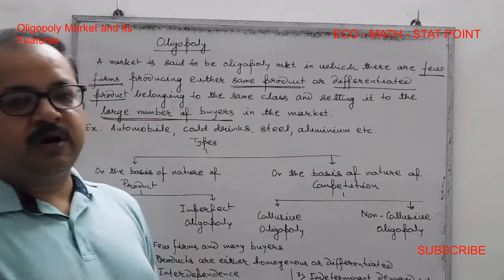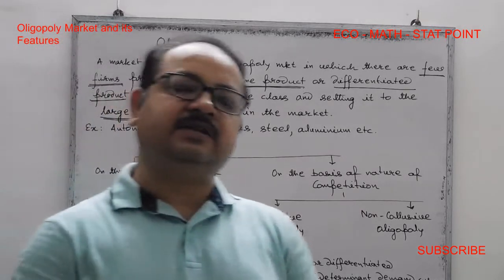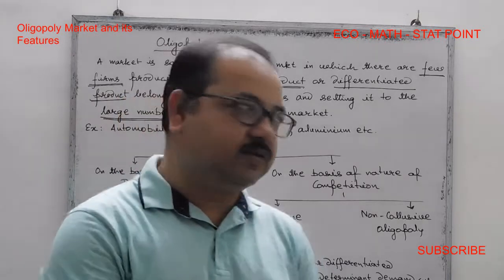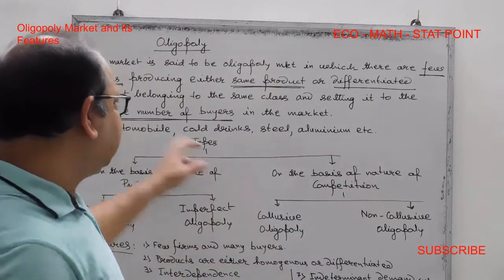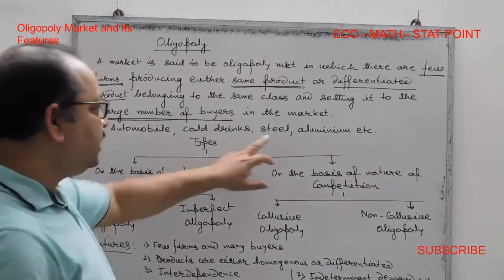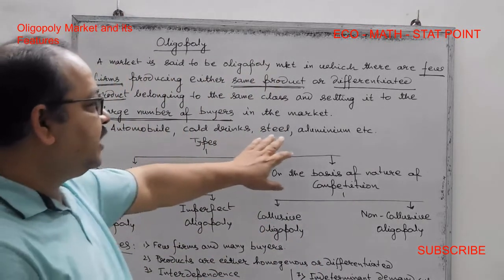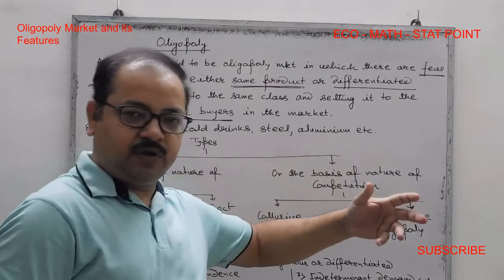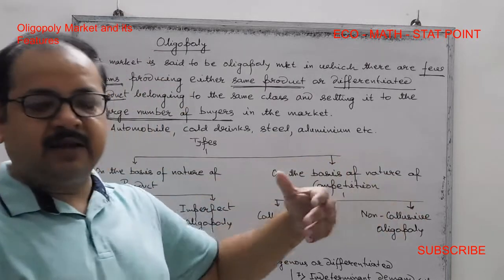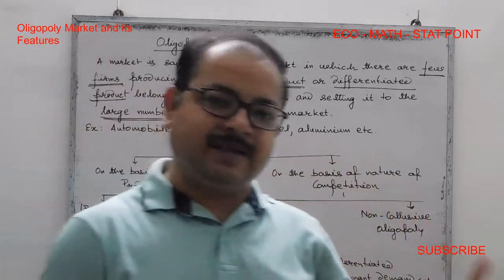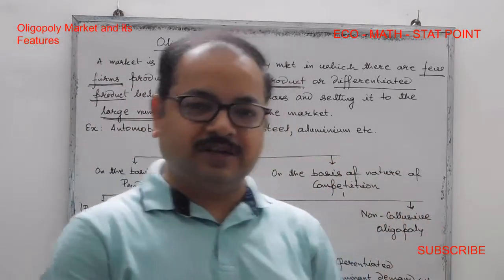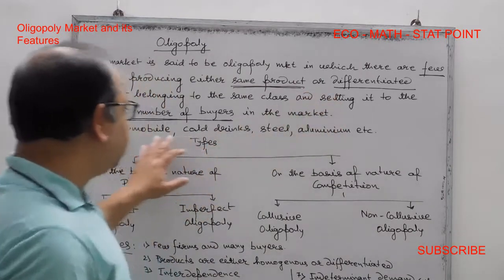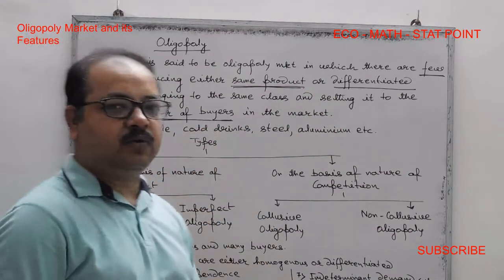The same product is produced by firms in the same industry — for example, steel and aluminum. The differentiated product is seen in industries like automobiles.